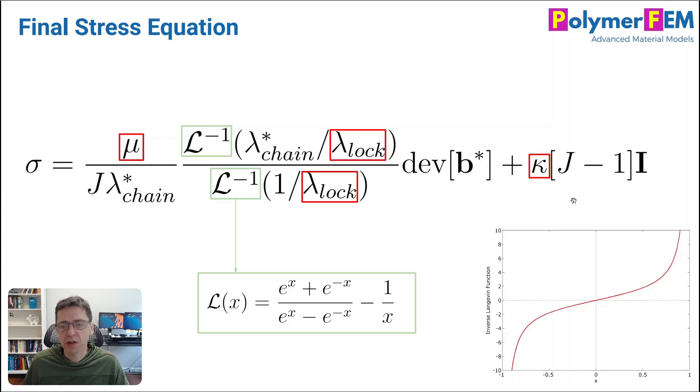Mu gives the initial shear modulus, kappa is the bulk modulus, and lambda lock is the stretch at which, the molecular stretch at which, the material becomes infinitely stiff.